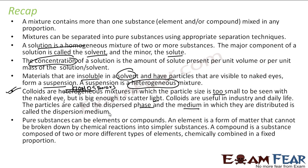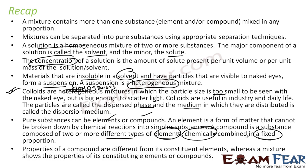Pure substances can be classified as either Elements or Compounds. An Element is a form of matter that cannot be broken down by a chemical reaction into a simpler substance. A Compound is a substance composed of two or more different types of elements that are chemically combined in a fixed proportion — please note these key words: chemically combined and fixed proportion. The properties of Compounds are totally different from their constituent elements, but in case of a Mixture, the properties of the mixture are similar to those of the constituent substances.